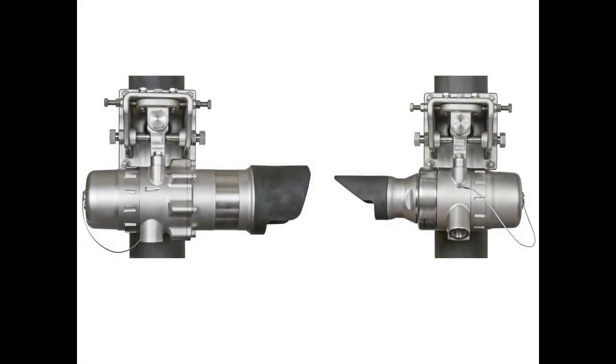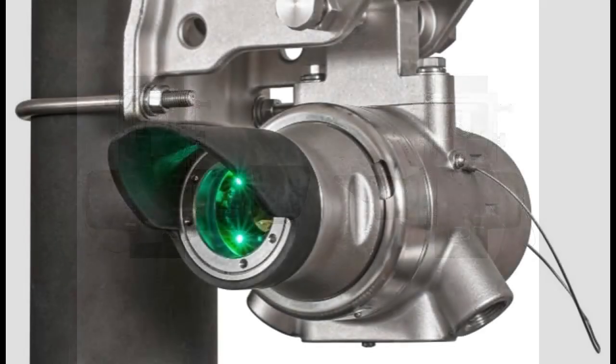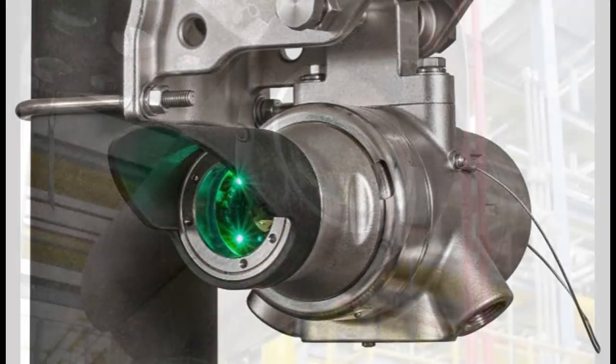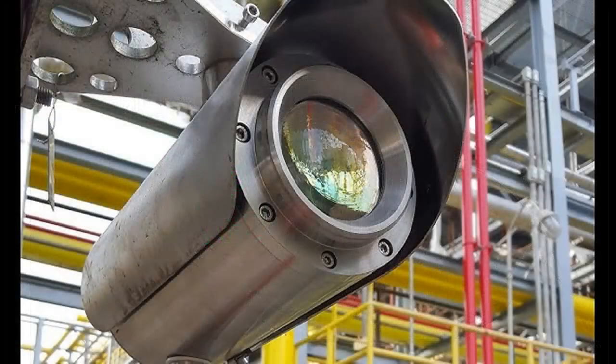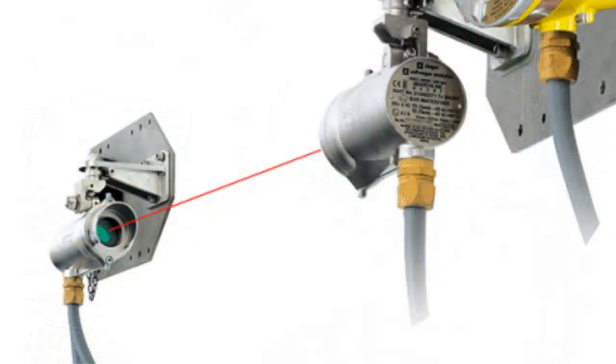A line-of-sight, or LOS gas detector, is a type of gas detection system that uses a beam of light, often infrared or ultraviolet, to detect the presence and concentration of gas along a defined path between a transmitter and a receiver.